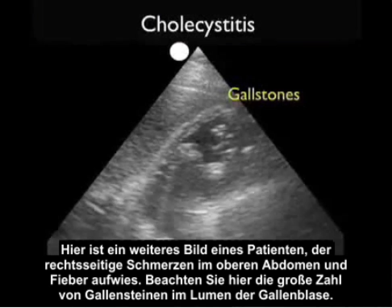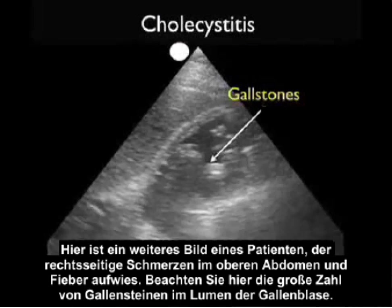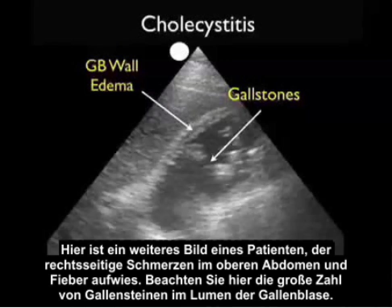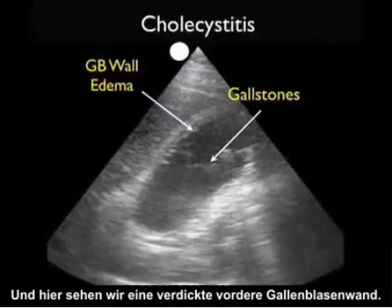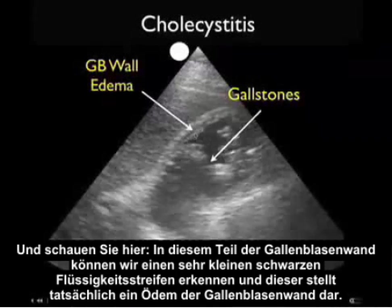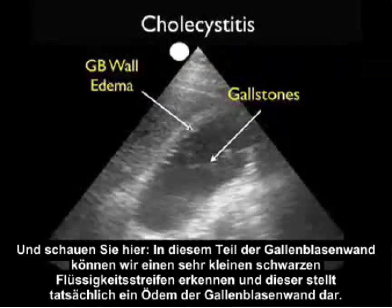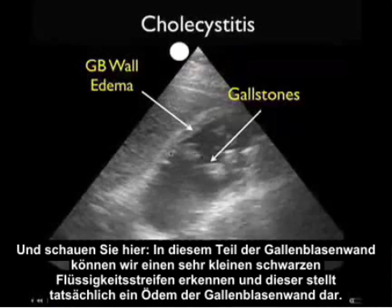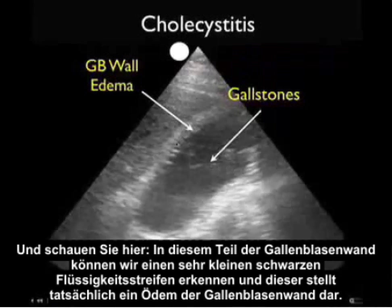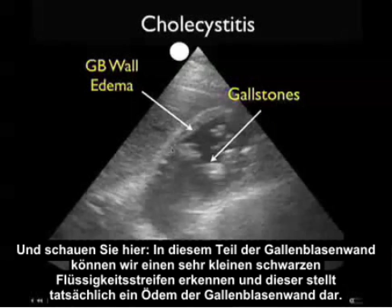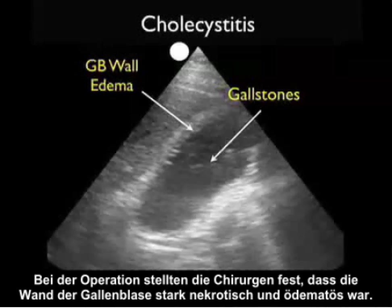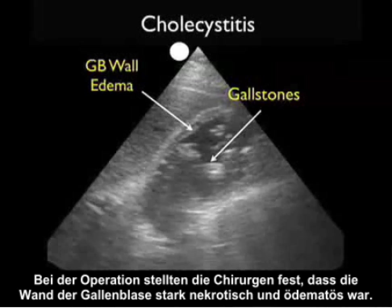Here's another image of a patient who presented with right upper quadrant pain and fever. Notice here the large amount of gallstones present within the lumen of the gallbladder, a thickened anterior gallbladder wall, and a very small black stripe of fluid in the interior part of the gallbladder wall — this represents gallbladder wall edema. At surgery, the surgeons found that the wall of the gallbladder was significantly necrotic and edematous.